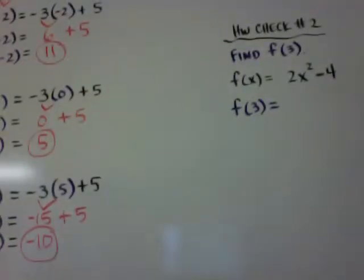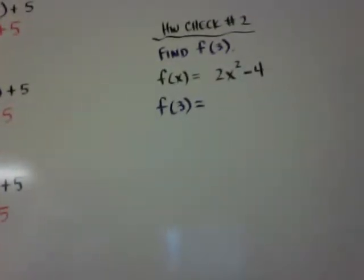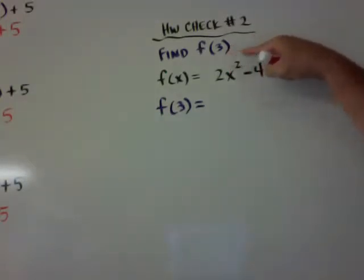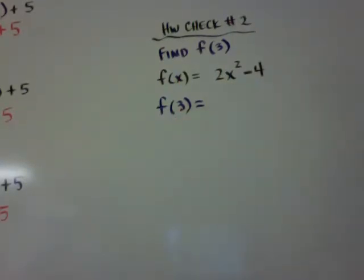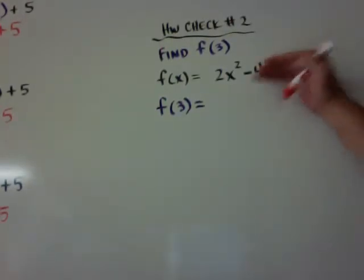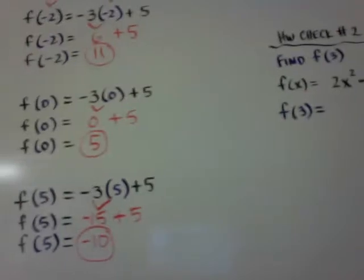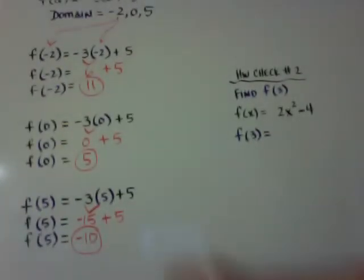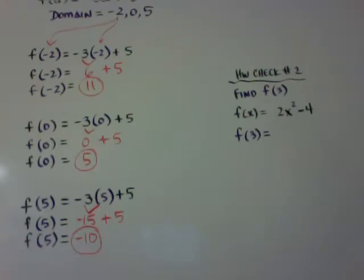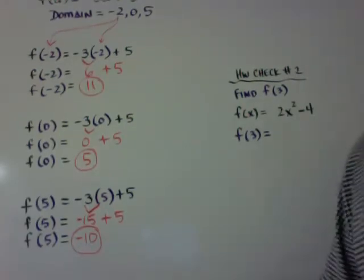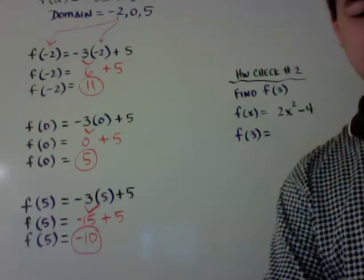Here's homework check number 2. Find f(3) if f(x) = 2x² - 4. Please write the original problem, show your work with a couple of steps, and it should look similar to the examples shown. Input your answer. This video is 14 minutes — hope this helps, take care.